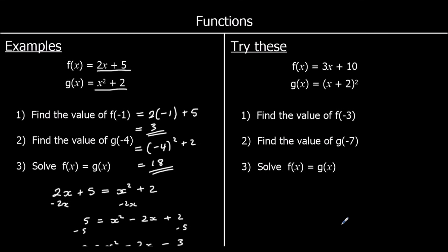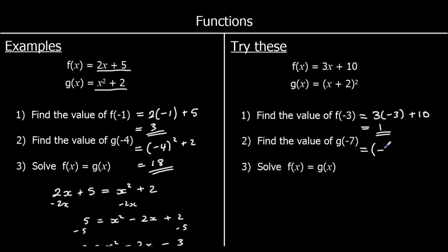Question 1: find the value of f(negative 3). Change x to negative 3 in the f function. So 3 times negative 3 plus 10. Negative 9 plus 10 is 1. Question 2: changing x to negative 7 in the g function. So negative 7 plus 2, all squared. Negative 5 squared is 25.